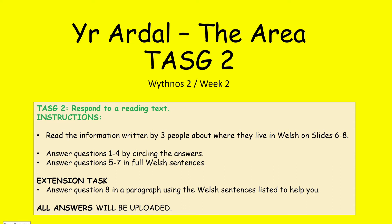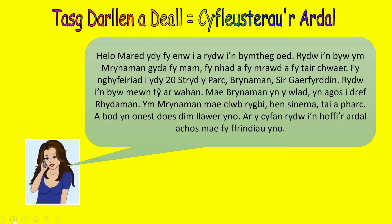Moving on to task two, this is a reading task. The first text is written by Mared describing the area where she lives. Let's read this together: 'Helo, Mared ydi fy enw i. A rydw i'n byw ym Mryn-amman gyda fy mam, fy nhad, fy mrawd a fy tair chwaer. Fy nghyfeiriad i ydi 1 Stryd y Parc, Bryn-amman, Sir Gaerfyrddin. Rydw i'n byw mewn tŷ ar wahân. Mae Bryn-amman yn y wlad, yn agos i dref Rhydaman. Ym Mryn-amman mae clwb rygbi, hen sinema, tai a pharc. A bod yn onest, does dim llawer yno. Ar y cyfan, rydw i'n hoffi'r ardal achos mae fy ffrindiau yno.' So that was Mared writing about the area where she lives.